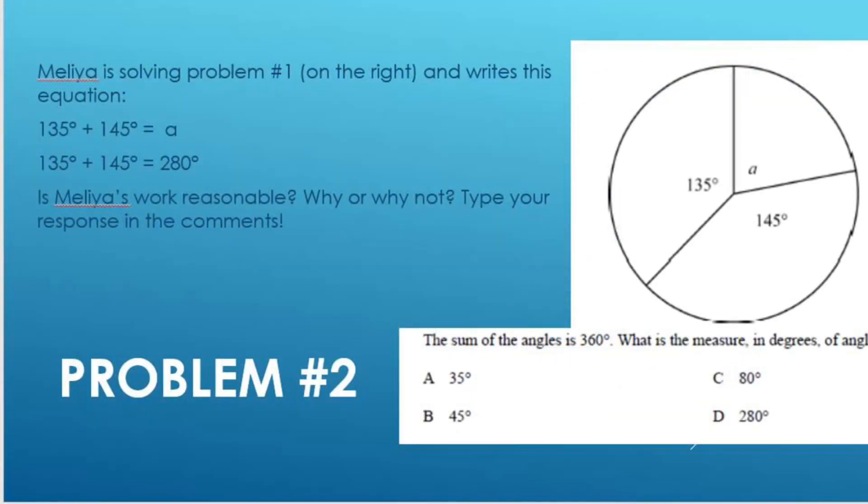Now let's take a look at that second problem. Malia was trying to solve our first problem. She did so by taking 135 degrees plus 145 degrees to equal A. We need to determine whether this was reasonable or not.